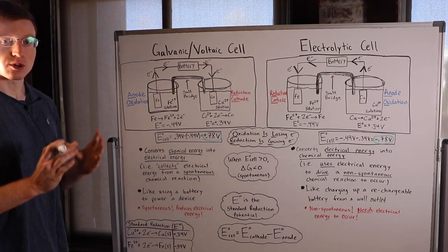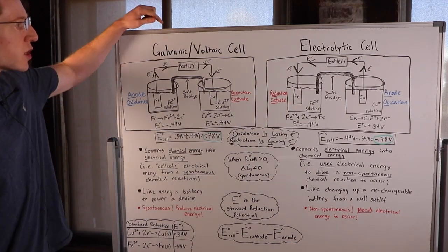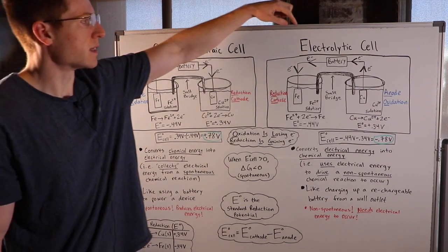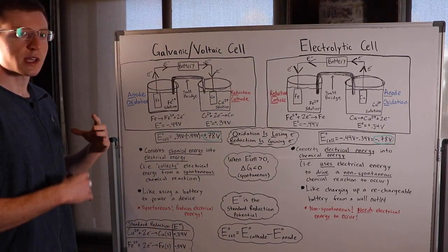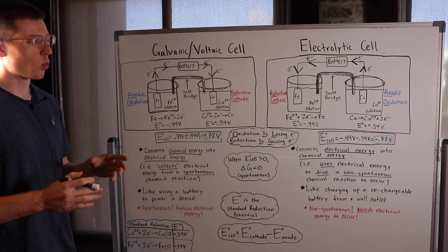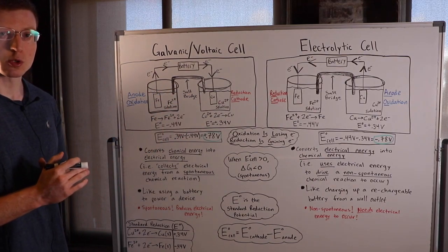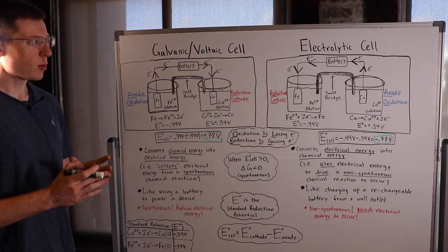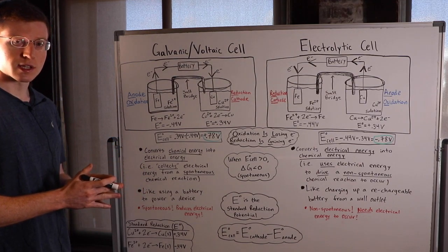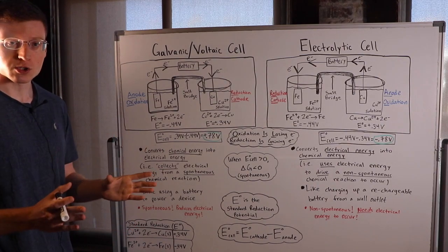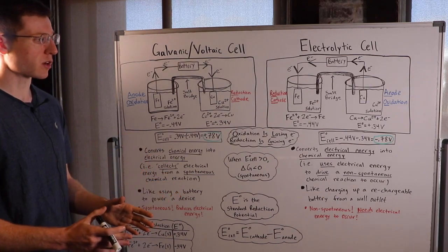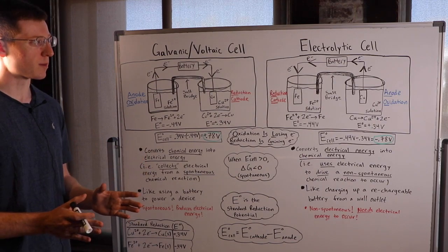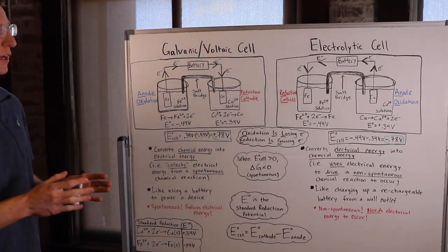In this video we're going to talk about electrochemistry and in particular the two types of electrochemical cells: the galvanic or voltaic cell and the electrolytic cell. What these cells do is convert between chemical energy and electrical energy. Remember when we learned about redox reactions and how they transfer electrons? That's all electricity is — the transfer or movement of electrons. So if we have a redox reaction, we have the potential to harness electricity from it. This is actually how batteries work.